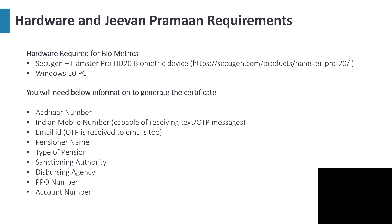Once you have set up the biometric device and RD service established, you will need the following information: Aadhaar number, Indian mobile number — because you should be able to receive OTP messages. You can get OTP over email too, but when you download the certificate at the end, you will need the OTP on your mobile number, as they don't send it to email. You'll also need the pensioner name, type of pension, sanctioning authority, dispersing agency, PPO number, and account number.